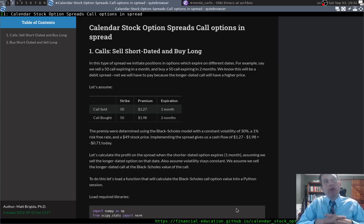We're going to look at calendar stock option spreads, and as an example, we're going to look at this spread here. We're going to sell a 50 strike price call option that expires in one month, and we're going to buy an option with the same strike, same stock, obviously same everything, except it expires in two months.